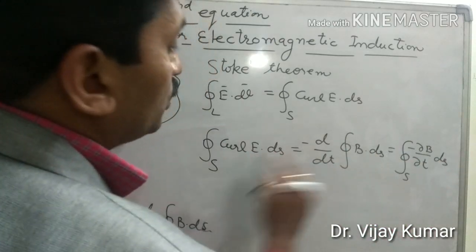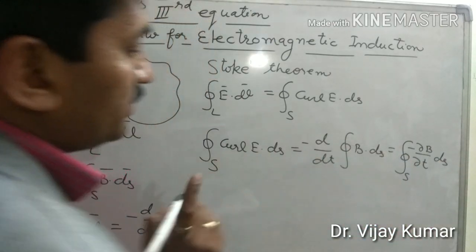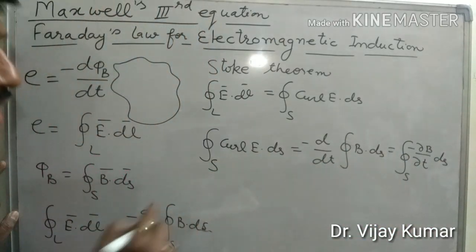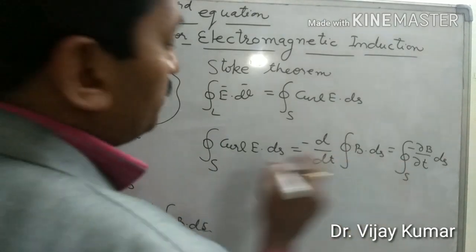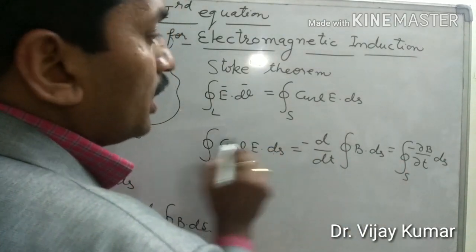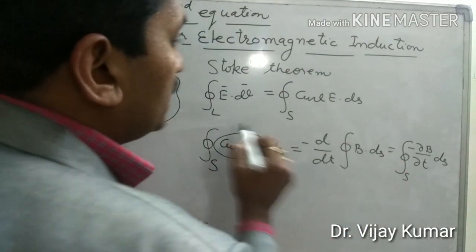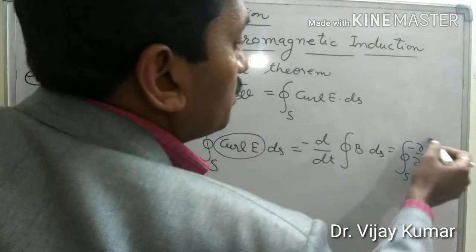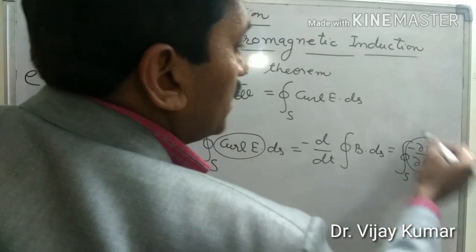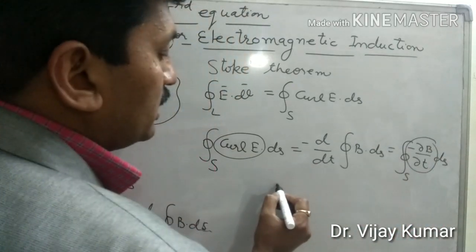Now both sides are surface integrations, so we can compare them. After comparison, curl E becomes equal to minus ∂B/∂t.